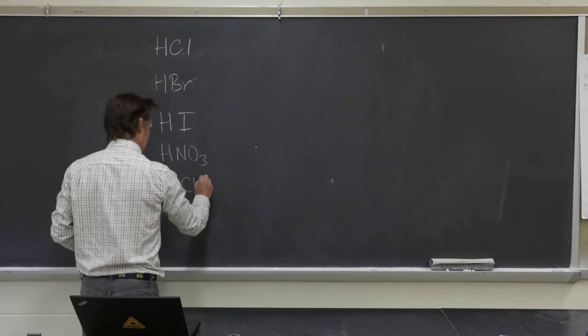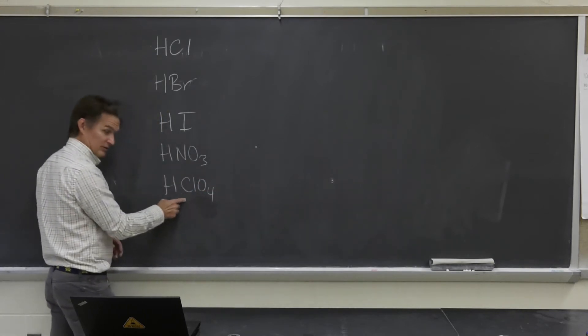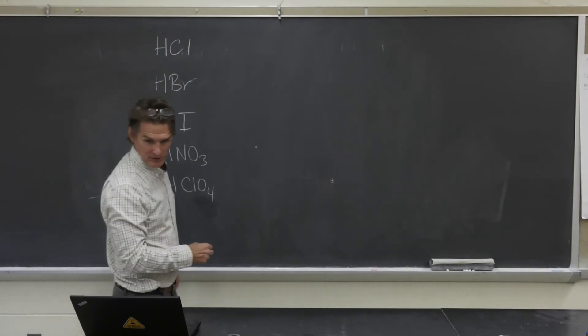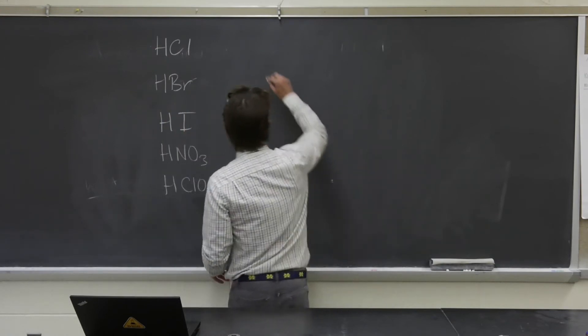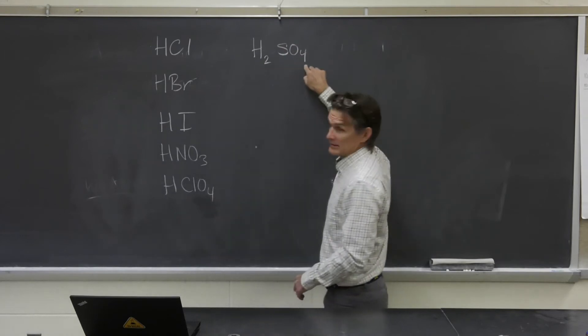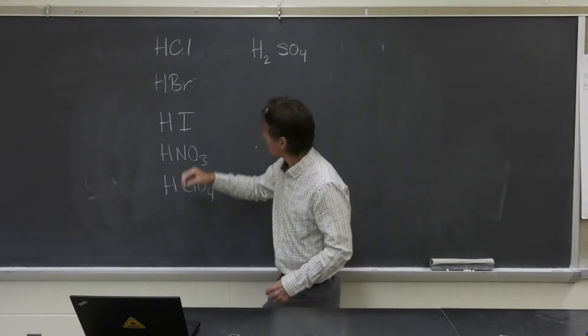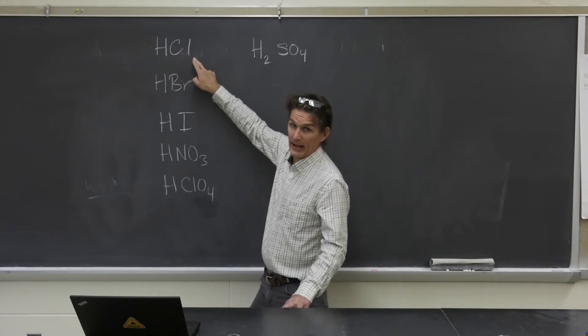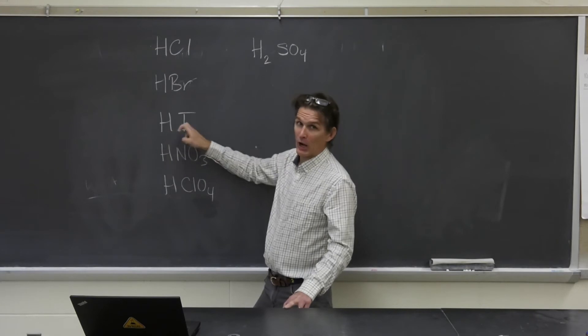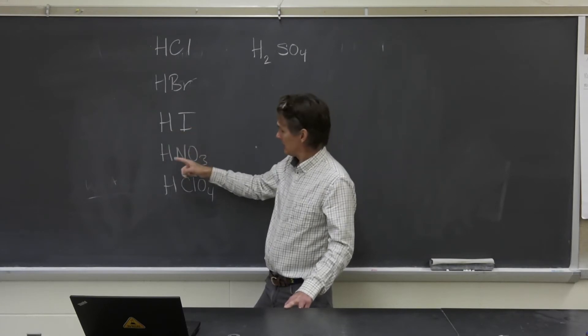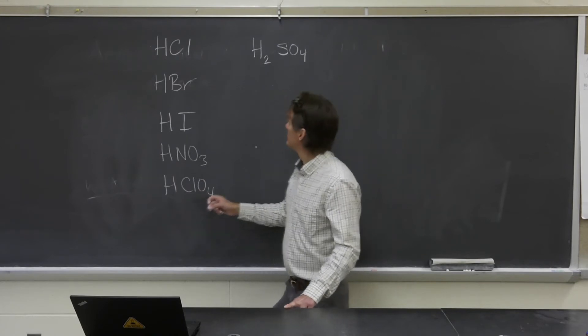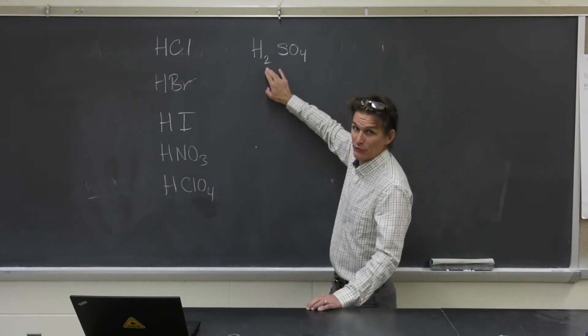There's perchloric acid, in which there's a perchlorate ion with a proton. There's chloric acid. I'm not going to write that one down. You don't have to worry so much about that one. But this one you ought to know: sulfuric acid. So let me name these. Hydrochloric acid, hydrobromic acid, hydroiotic acid, nitric acid, perchloric acid, and sulfuric acid.